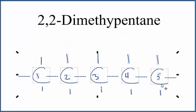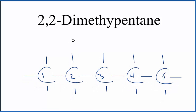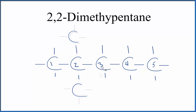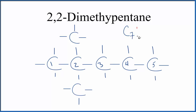Let's move this down just a little bit and put a carbon here and here. Each carbon has four bonds, so we'll put three hydrogens around it to make that methyl group. This is the structure for 2,2-dimethylpentane. If we wanted to write the molecular formula, we just count the carbons and all the hydrogens — we'd have C7H16.